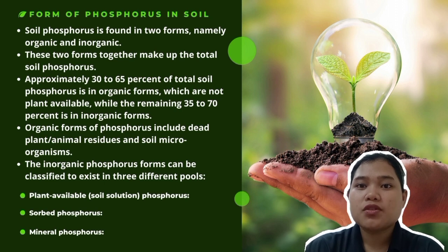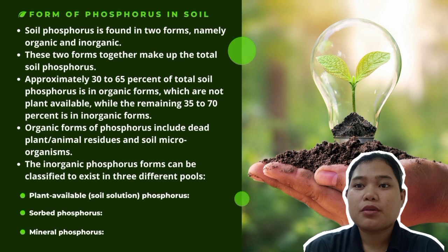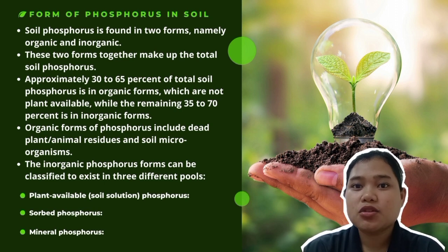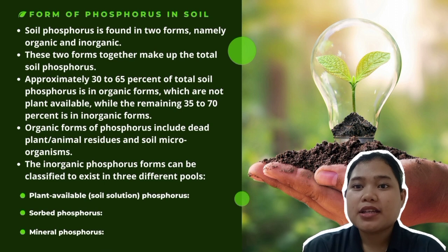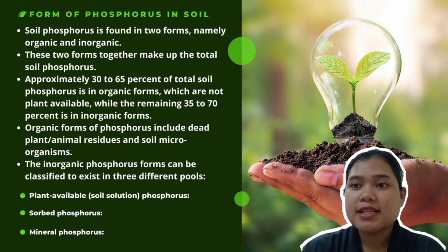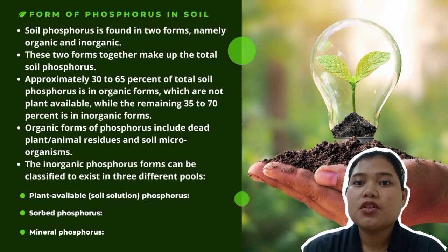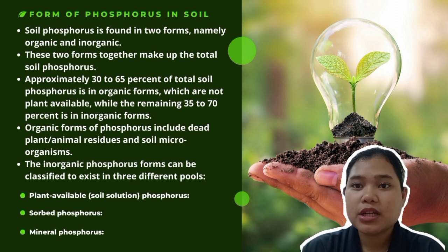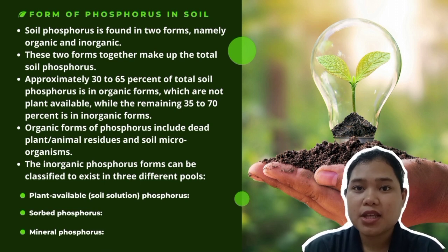The second pool is sorbed phosphorus. This phosphorus pool is comprised of inorganic phosphorus attached to clay surfaces, iron, aluminium and calcium oxides in the soil. The phosphorus in this pool is released slowly for plant uptake.